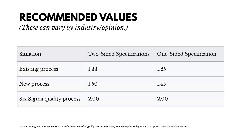The recommended values for process capability vary by industry and opinion, but here's a good reference broken out by existing process, new process, or six sigma quality process, and also by whether it's a two-sided specification or one-sided — whether there are two limits or just one. For an existing process with two-sided specification limits, a recommended capability is 1.33 or greater.